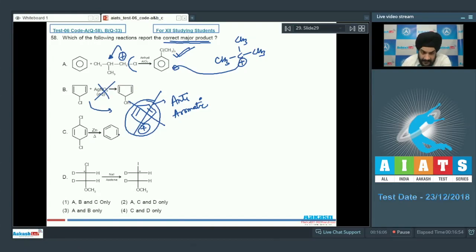In option C, the substrate reacts with zinc dust in presence of heat. This zinc dust will produce radicals which will undergo resonance to form benzene. This reaction is correctly given.